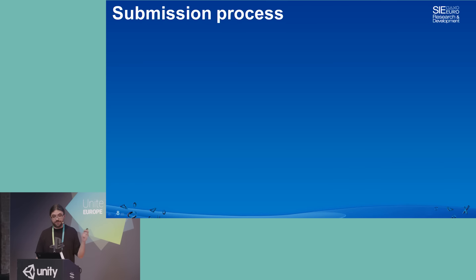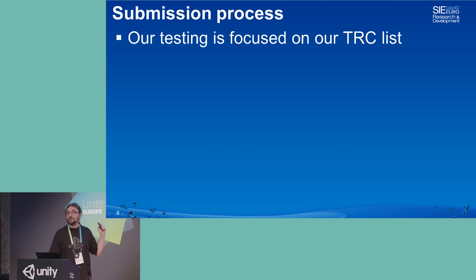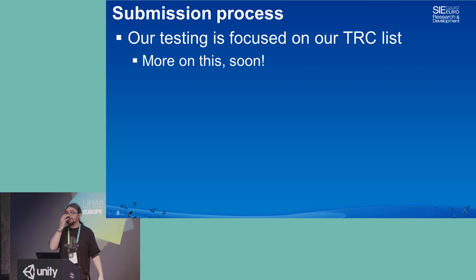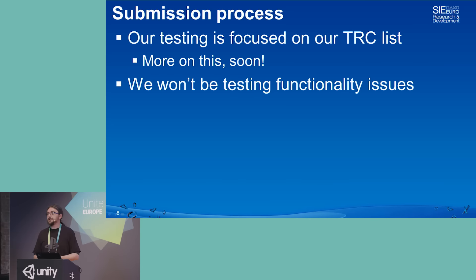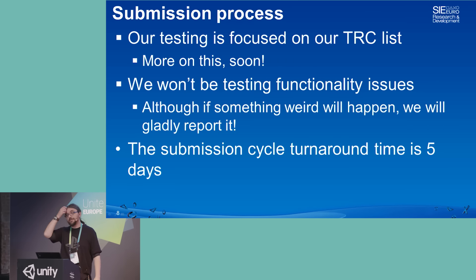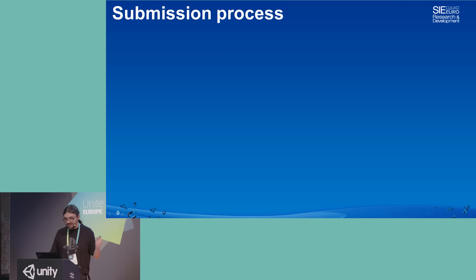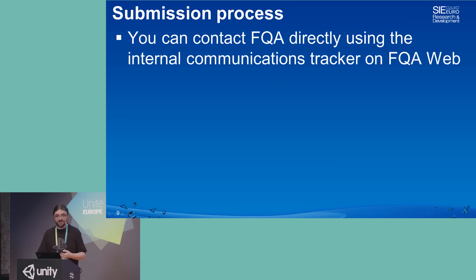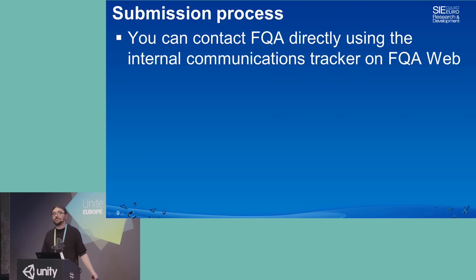In terms of the submission process itself, our testing is focused on TRC. We won't be testing functionality issues, which is why I ask you to test your game before sending it to us. However, if something weird happens during testing, the QA team will let you know. The submission cycle turnaround time is five calendar days. Our QA team works every day, including Saturday and Sunday. You can also contact QA directly using their internal communication tracker.